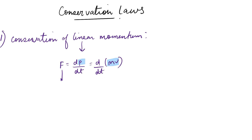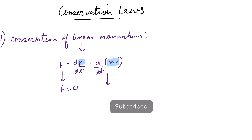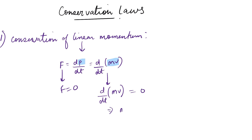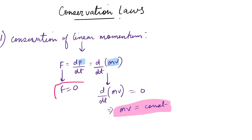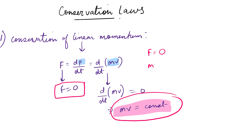Now if the external force is zero, that is F is zero, then we can write that d/dt of mv is equal to zero. This means that mv is equal to a constant. So this is an important conclusion: in the absence of an external force, the linear momentum of a particle is conserved. In short, if F equals zero, then mv equals constant.